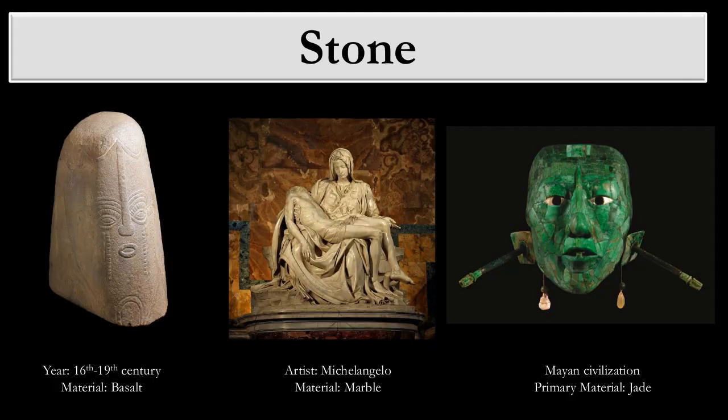We can say the same about stone. Here's basalt — that natural material — with this beautiful stylized head. If we look at Michelangelo's Pietà in the middle, it's incredible to think he carved every detail out of marble. And if we look at the Mayan civilization, we're using jade as an artist to create this really beautiful, stylized face. It's just absolutely gorgeous — that's how we can use stone.